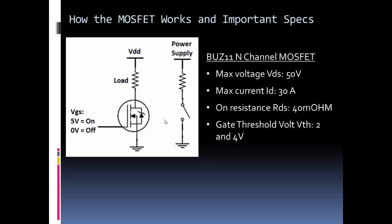If our value is higher than 4 volts, even if we couldn't get quite 5 volts, if we had 4.8 volts, our MOSFET will act like a short or a closed switch. Those are some important specs.